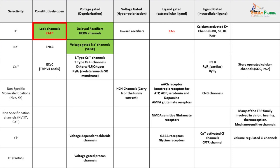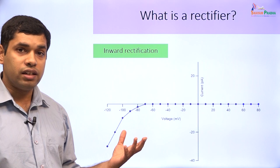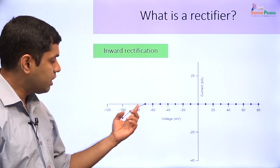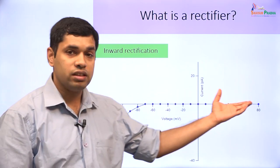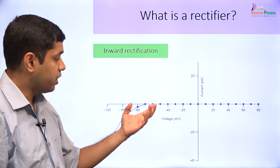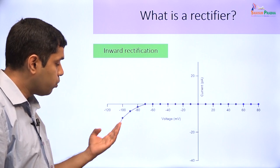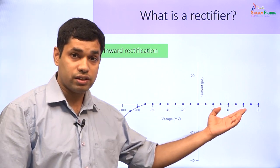We talked about voltage-gated sodium channels, the delayed rectifier potassium channels, and the leak potassium channels, which help in maintaining the resting membrane potential. Now we will study the next set of ion channels and begin by looking at the inward rectifier ion channels. We have already discussed that rectification means the conductance in one particular direction is more than the conductance in the other direction. This is an example of a graph of an inward rectifier where inward currents are much larger than the outward currents.